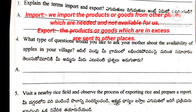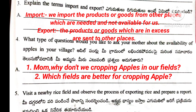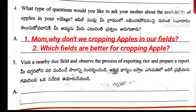Question number 4: What type of questions would you like to ask your mother about the availability of apples in your village? Answer: Mom, why don't we grow apples in our fields? And another question: Which fields are better for growing apples? Question number 5: Visit a nearby rice field and observe the process of exporting rice and prepare your report. This is a student activity — observe the process of exporting rice and prepare a report.